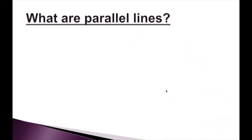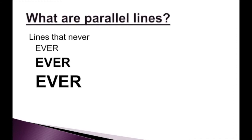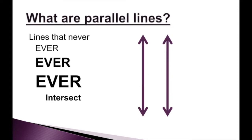So first of all, what exactly are parallel lines? Parallel lines are lines that never, ever intersect. They never ever cross, no matter how long they go on. So these two are parallel lines because they'll go on and on in both directions forever and they will never touch.